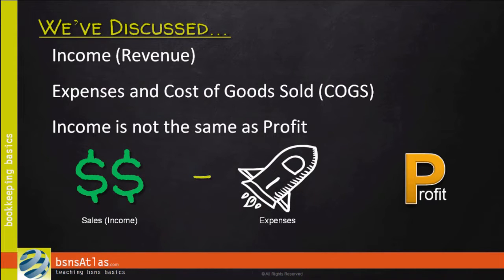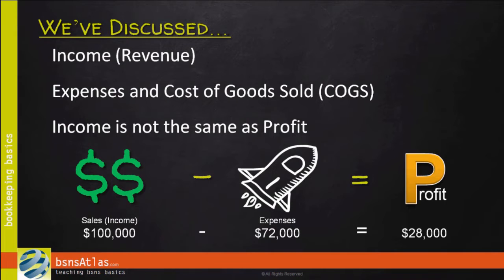You make this much, you spend this much making it, here's what's left. You may make $100,000 in sales, it may cost you $72,000 in expenses, which means that you have $28,000 in profit. Sometimes, though, you may spend more than you bring in. We'll talk about that in a second.